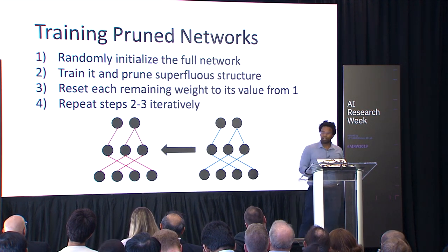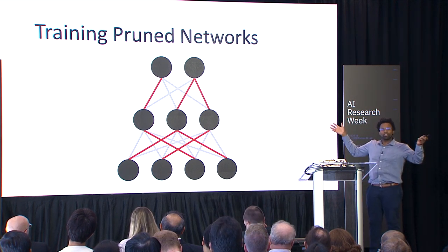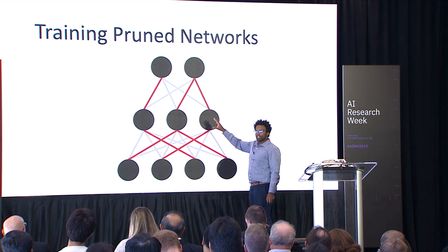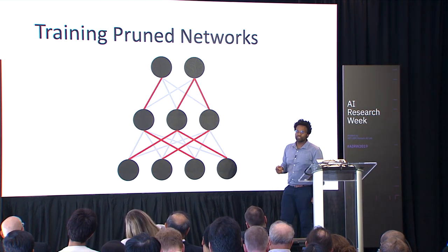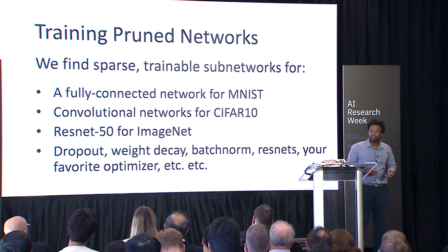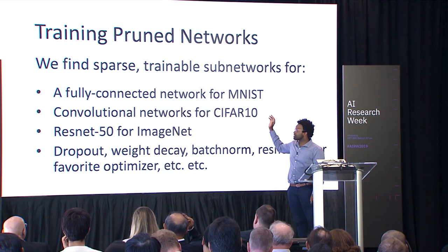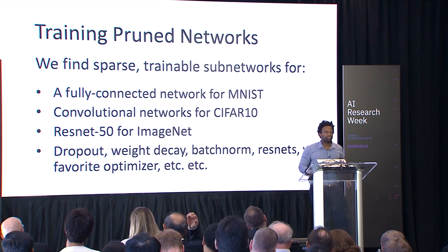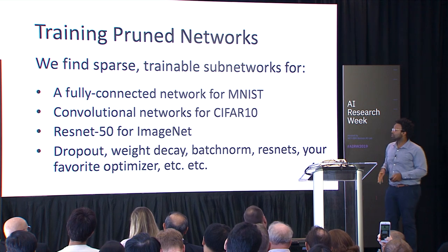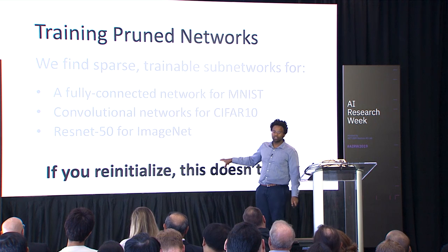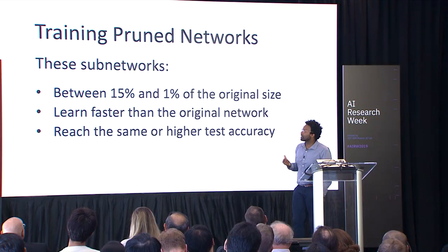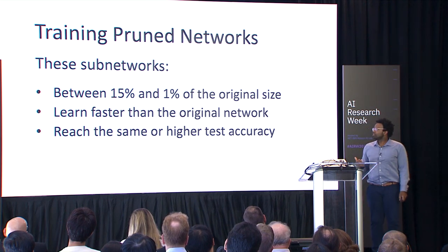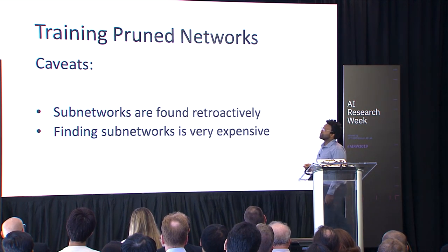What's very interesting is that we can take very large networks, apply this process, and find some very small network that can actually train to the same accuracy, oftentimes more quickly or at least as quickly as the large original over-parameterized network. This works for fully connected networks on MNIST, CIFAR, and ImageNet, across a wide variety of architecture tweaks. The key difference from past work is the initialization — if you re-initialize, this just does not work.